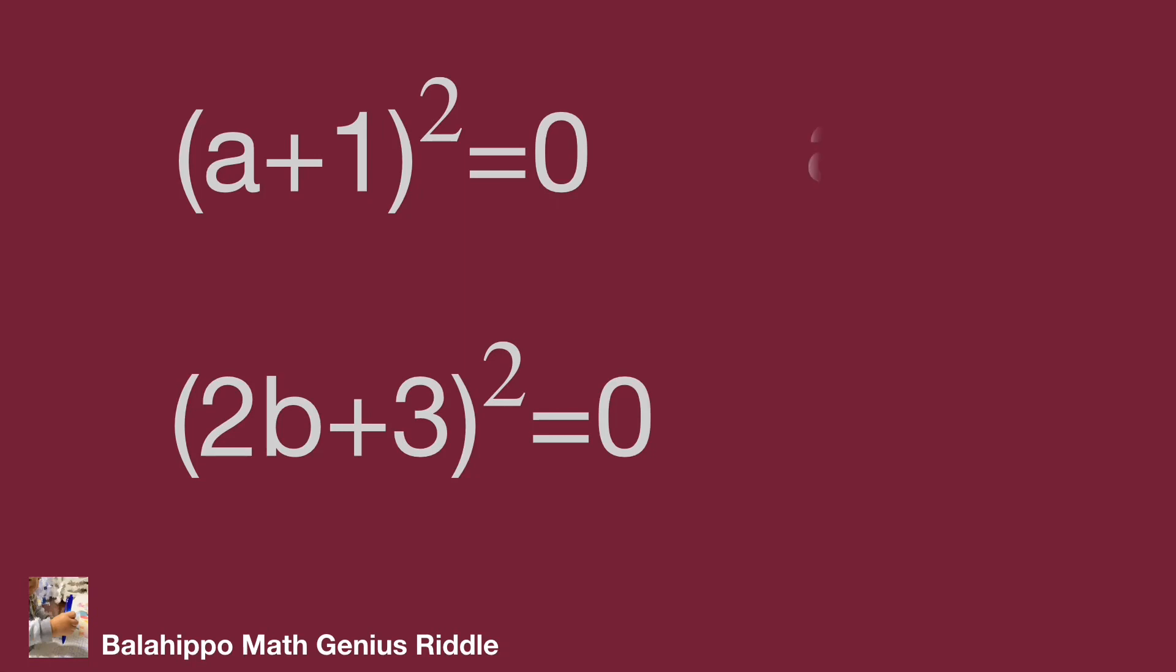So a equal to negative 1, and b equal to negative 3 over 2. That's the value we get. Do you find it? Hope you enjoy the video. Thank you.